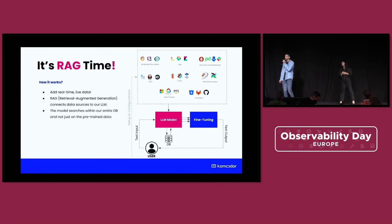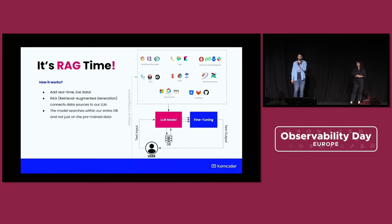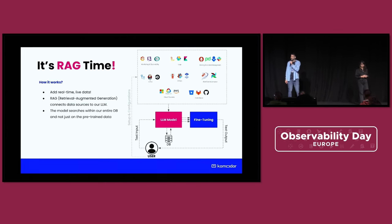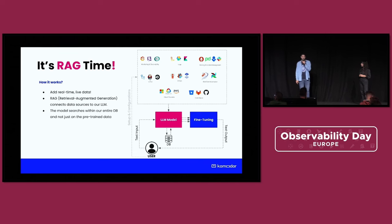We can solve that — there is a solution that lets us go to the prompt, ask a question, and get a result that's actually queried from live data. This is called RAG — Retrieval Augmented Generation. What it does is, before we get the text output, it connects to the fine-tuning predefined data we've added, enabling observability tasks, and also queries live data. For example, if you ask what the average memory was over the last week, it can go into Prometheus, query that data, create a PromQL query for it, and give you the results back.